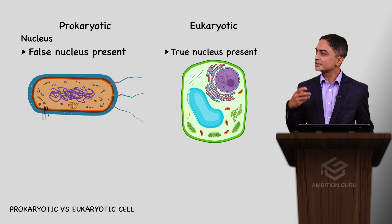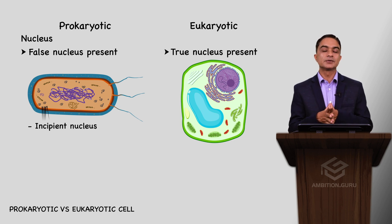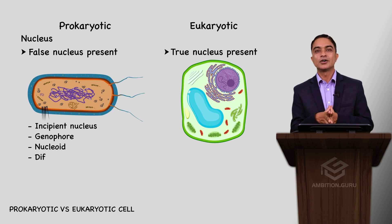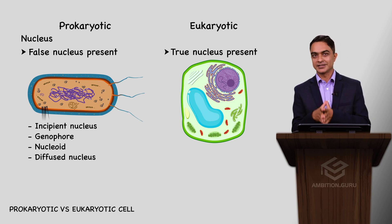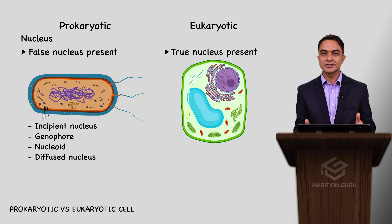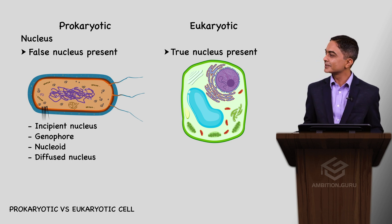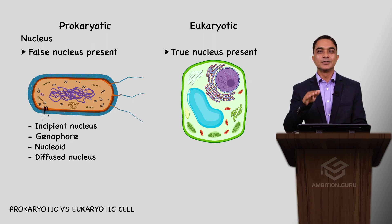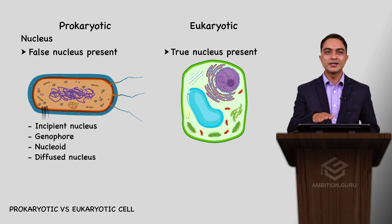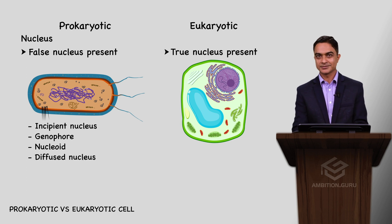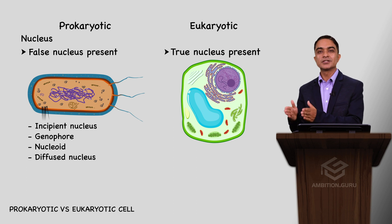The false nucleus is sometimes called incipient nucleus, nucleophore, nucleoid, or diffused nucleus. Remember, in prokaryotic cells, the nucleus is a false nucleus — also called incipient nucleus, nucleophore, nucleoid, or diffused nucleus. These are different terminologies. In eukaryotic cells, a true nucleus is present.